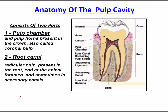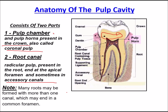The pulp cavity consists of the pulp chamber and pulp horn present in the crown, also called coronal pulp. The root canal, or radicular pulp, is present in the root and ends at the apical foramina. Many roots may form with more than one canal, which may end in a common foramen — this is commonly seen.